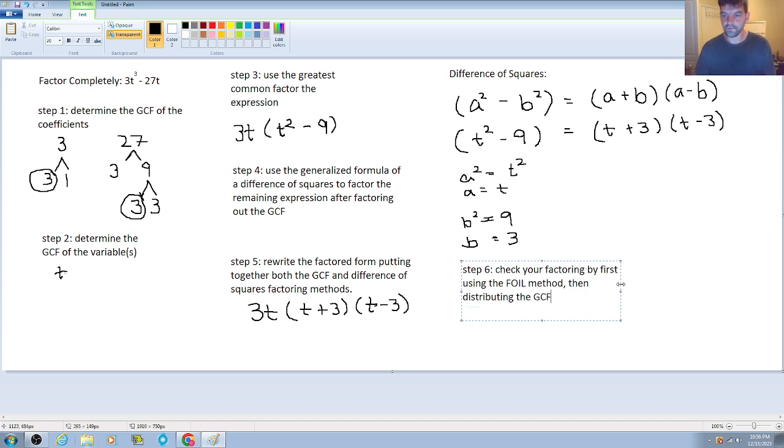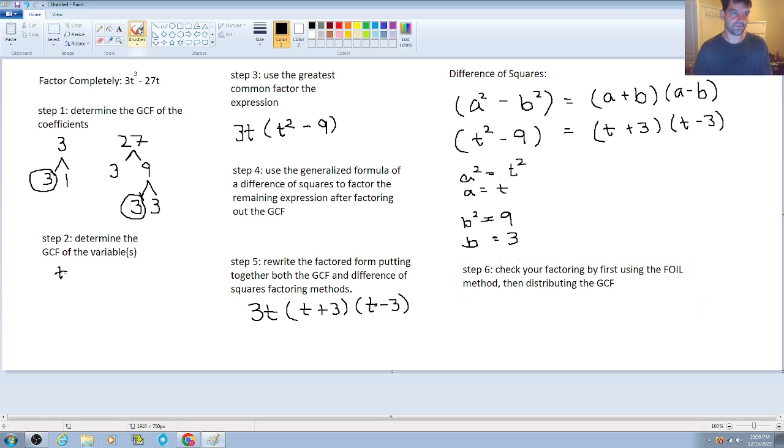Okay so we'll do here is we'll use the FOIL method and I'm actually going to use it down here so remember first outer inner last you have t squared, so t times t outer is going to be minus 3t, inner is going to be plus 3t, and then last is going to be minus 9. So remember what's the unique characteristics of a difference of squares is that the outer and inner terms are going to cancel so this is just going to give us t squared minus 9.